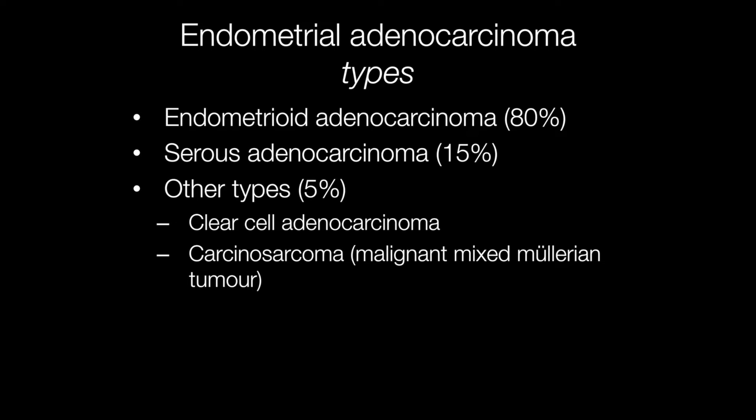Serous adenocarcinomas or papillary serous adenocarcinomas account for approximately 15% of endometrial adenocarcinomas, and these carcinomas are very aggressive. It is important to distinguish between serous adenocarcinoma and endometrioid adenocarcinoma because the endometrioid variety is less aggressive and treatment is slightly different. Other types include clear cell adenocarcinoma and carcinosarcoma, or malignant mixed Müllerian tumour, sometimes referred to as MMT.